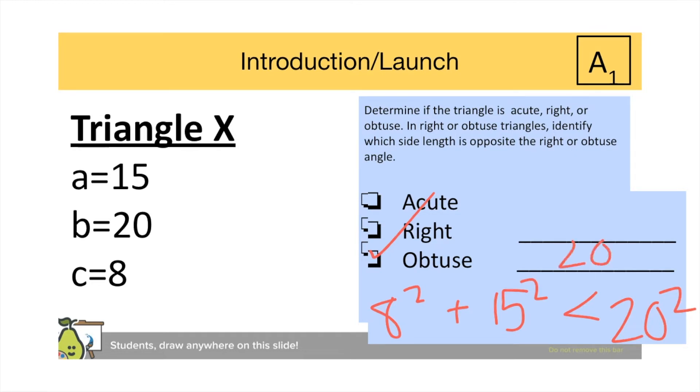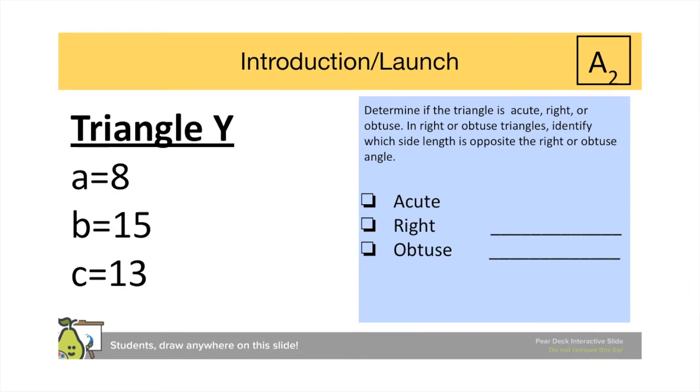Because it is obtuse, the side length of 20 is the one that's opposite of the obtuse angle.